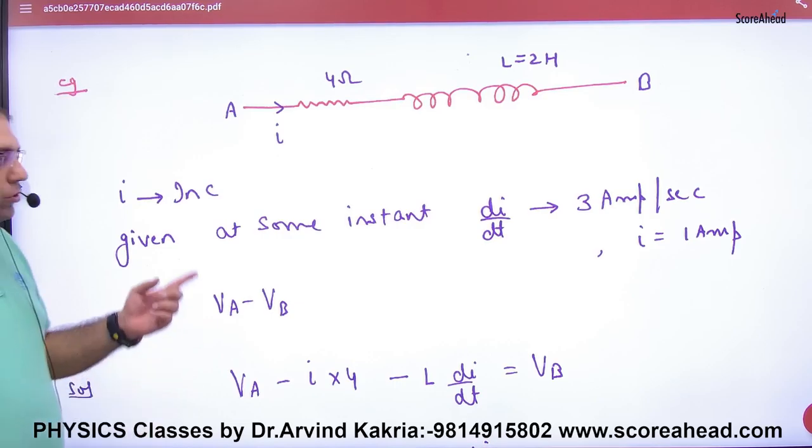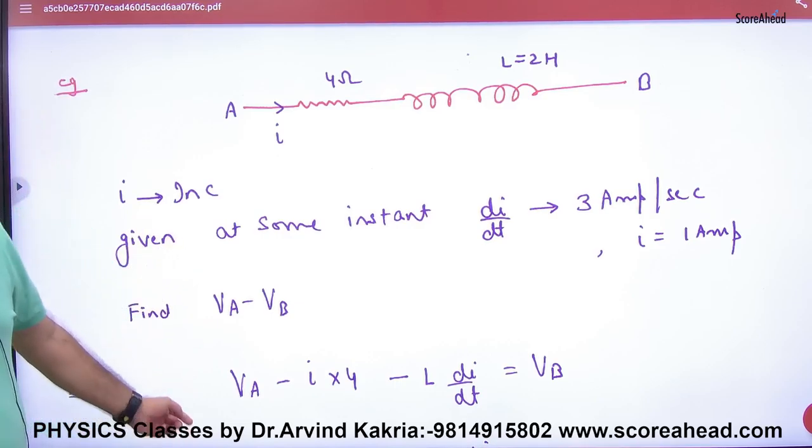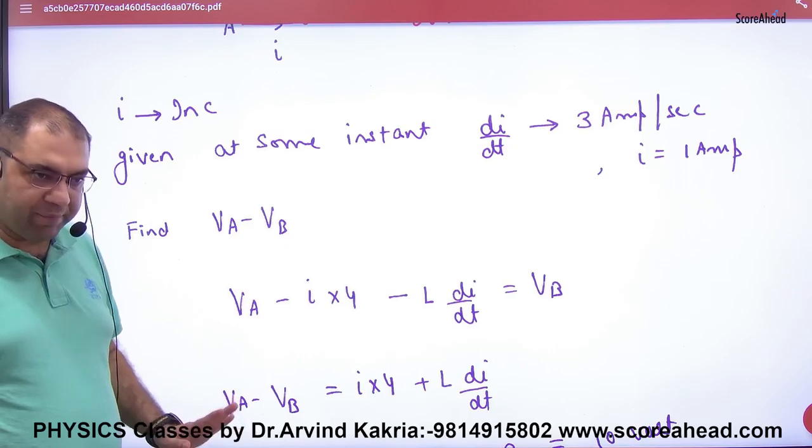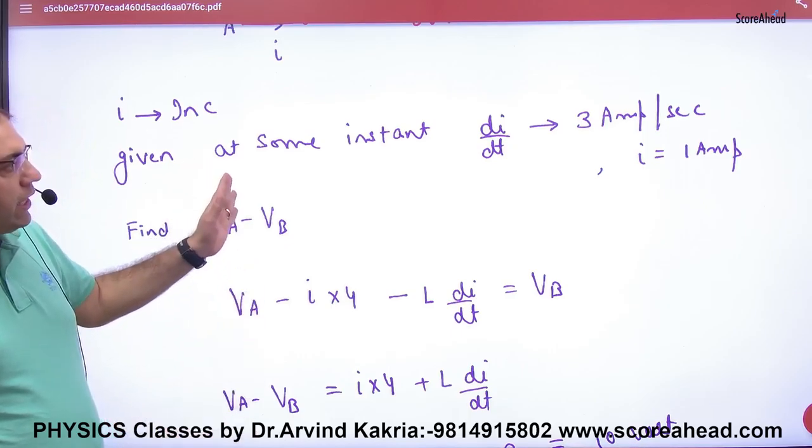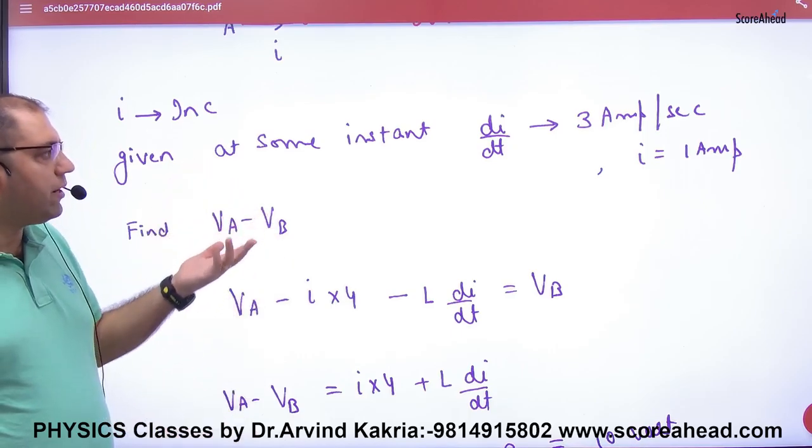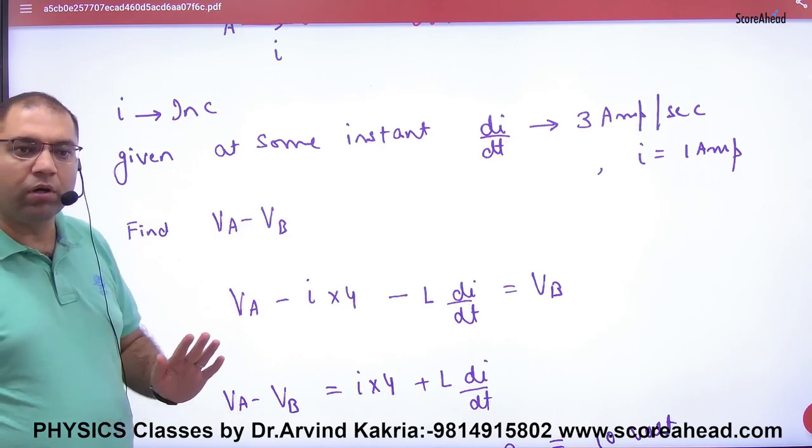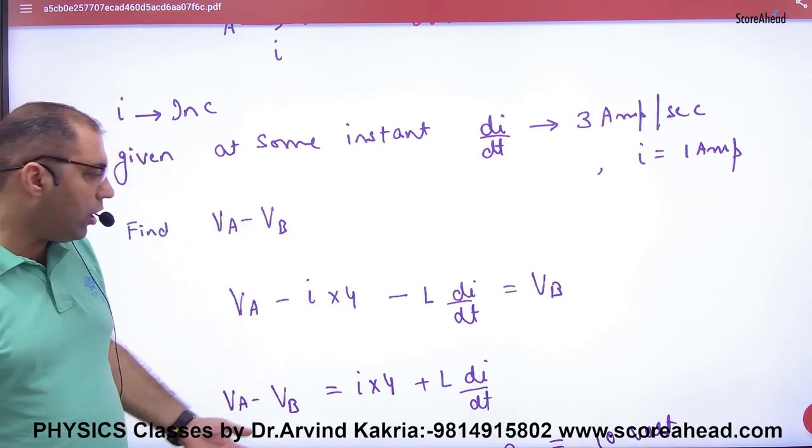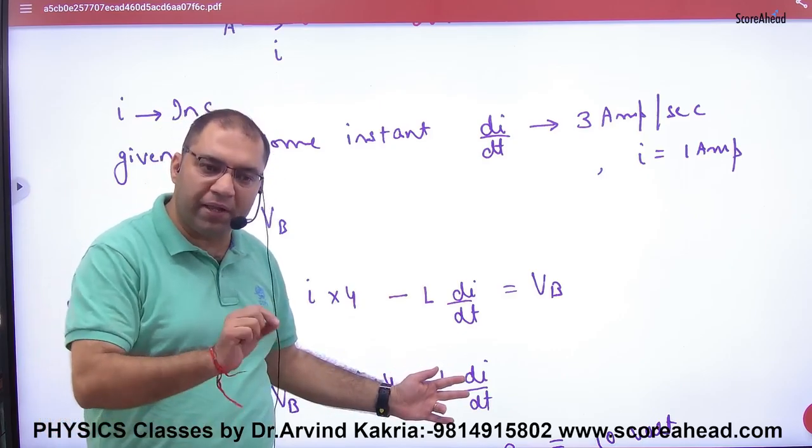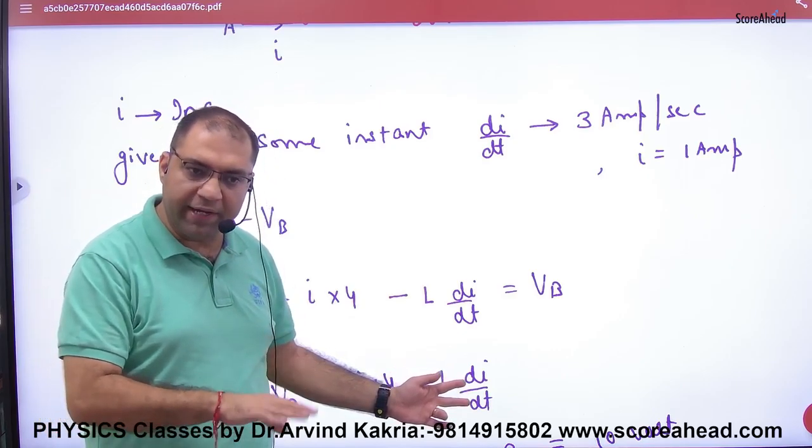Now two things: current value is instant 1 ampere, you will put here 1 ampere. Di/dt value is 3 ampere per second. If current is increasing, you will put in this formula di/dt plus 3.